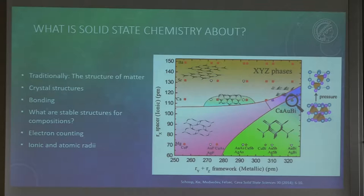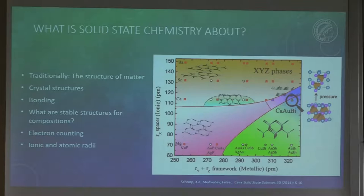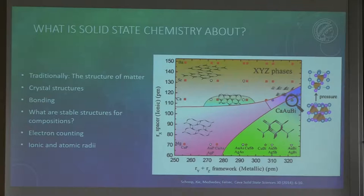Here is a picture of a structural map we sometimes like to construct in solid state chemistry - I did that during my PhD. This is for XYZ phases where they're all isoelectronic, so this is not about electron counting yet, but they are composed of different elements. The radius of the X element, which is barium, strontium, calcium, or manganese, is plotted on the X axis. On the Y axis, there's the sum of the Y and Z element radii. The different colored dots represent different structure types.